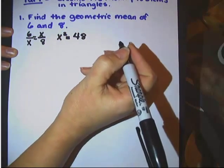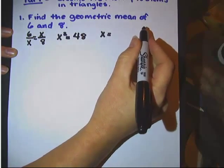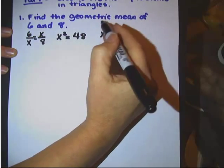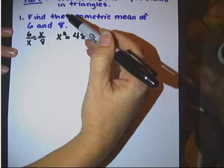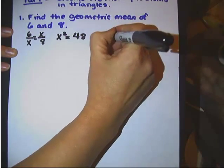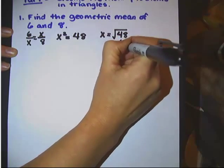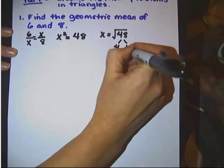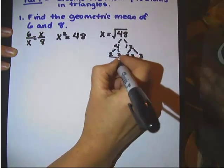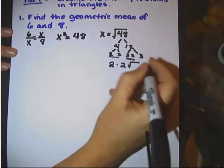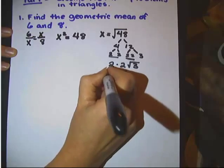If we square root both sides, in geometry we just worry about the positive square root, because for a geometric mean you're looking for a positive number — if you multiply by a common factor going from 6 to 8, it has to be positive. So the square root of 48 is our geometric mean. We simplify: 48 is 4 times 12, or 2 times 2 times 2 times 2 times 3. Pull out our pairs and we get 4 root 3. So the geometric mean of 6 and 8 is 4 root 3.